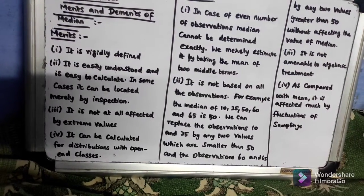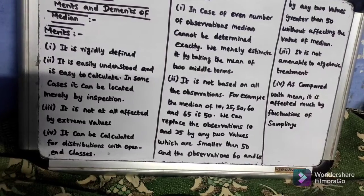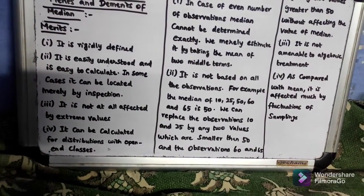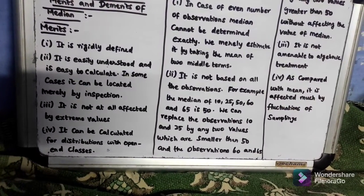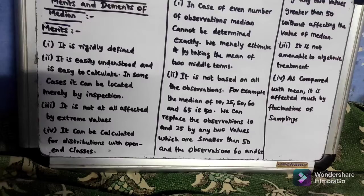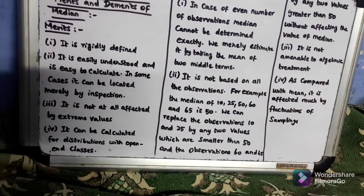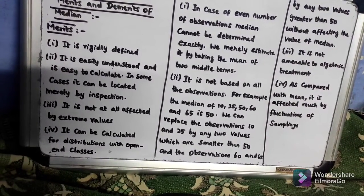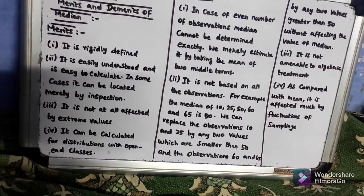For example, the median of 10, 25, 50, 60, 65 is 50, which is the middle term. We can replace the observations 10 and 25 by any two values which are smaller than 50.